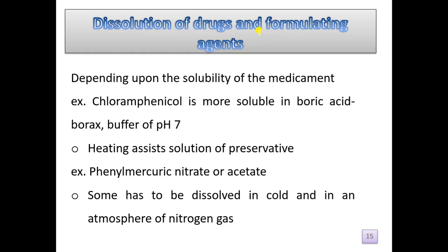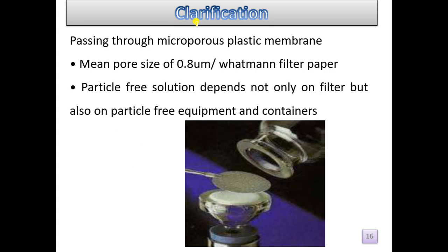The next step is dissolution of the drug (medicament) and other excipients. Depending upon the solubility of the medicament — for example, chloramphenicol is more soluble in boric acid-borax buffer of pH 7 — we choose the appropriate formulating agent and pH. Heating an acid solution of a preservative, for example phenyl mercuric nitrate or acetate, may be used. Some drugs must be dissolved cold and in an atmosphere of nitrogen gas.